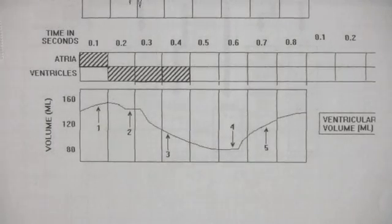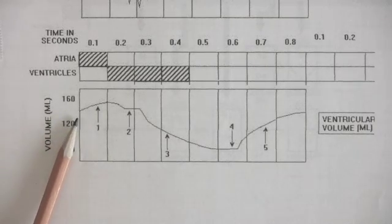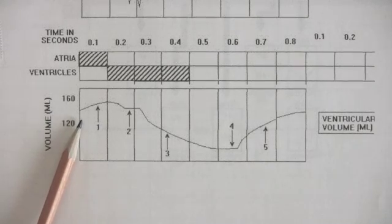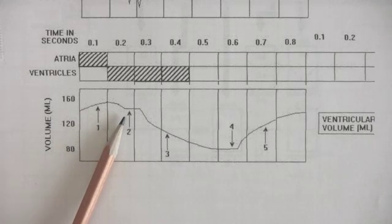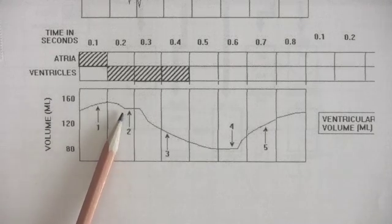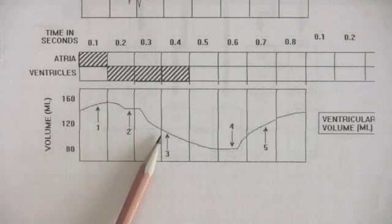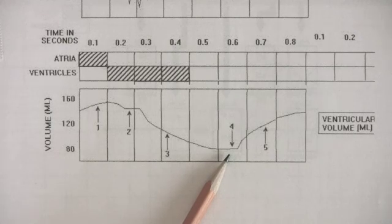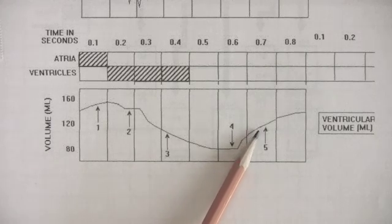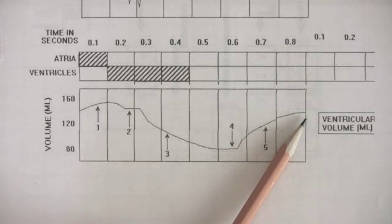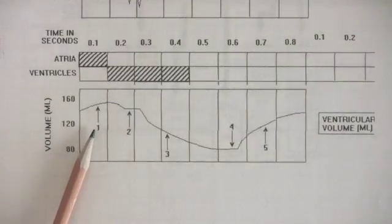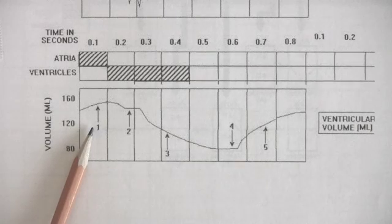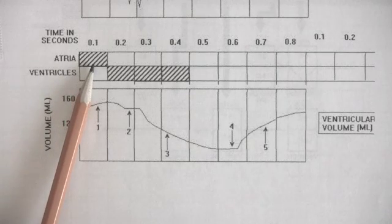Let's look at the changes in ventricular volume. At the beginning of the cardiac cycle, the volume in the ventricles is roughly 140 milliliters. It rises by the end of the first tenth of a second to roughly 160, and then drops in the second tenth of a second back to roughly 140. There's a very brief period when there's no change, and then the ventricular volume drops very sharply into the sixth tenth of a second to about 80 milliliters. Then the ventricular volume rises in the remaining two tenths of a second back to approximately 140. The initial rise in ventricular volume is due to blood flow into the ventricles from the atria. It occurs during atrial systole.